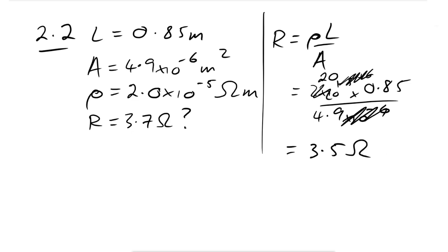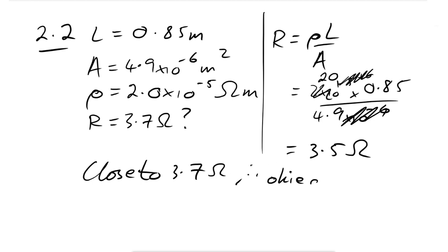3.5 ohms is a little bit different from 3.7 ohms — the mark scheme isn't very helpful and AQA appear to be hedging their bets. We'll say it's close to 3.7 ohms, therefore suitable. But if you said no because it's too different, you'd also get the mark.